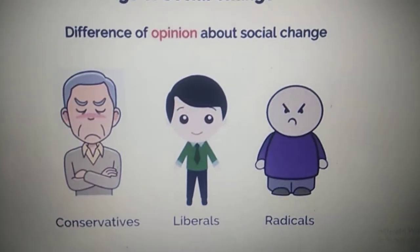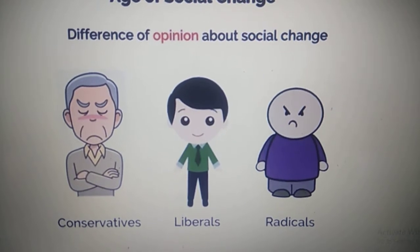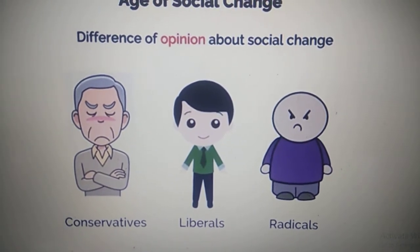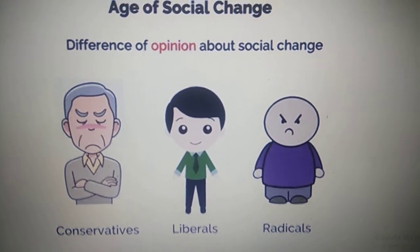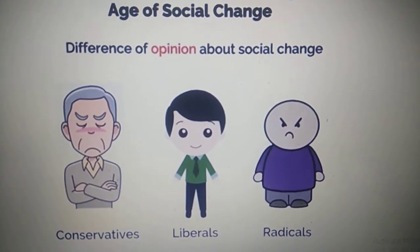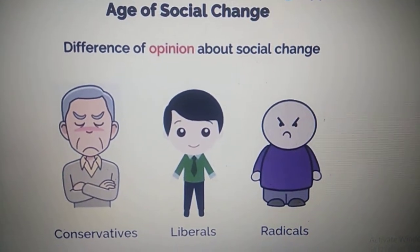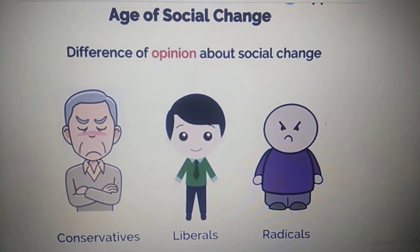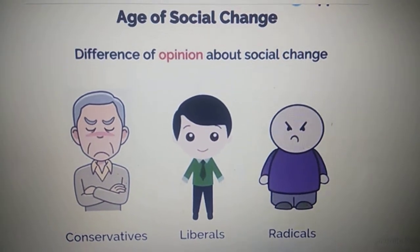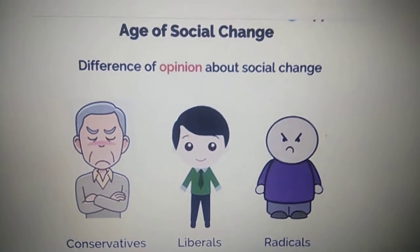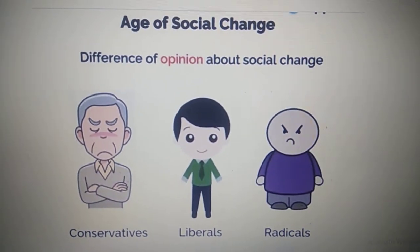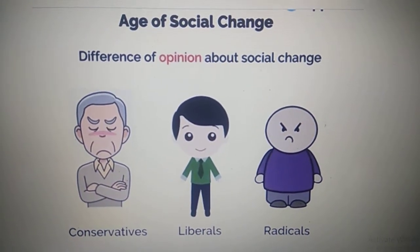We are going to learn about three major divisions of opinion about the social change that needs to be brought about in the society. The three groups are: Conservatives, Liberals, and Radicals. We will look into their opinions about bringing about social change in society.